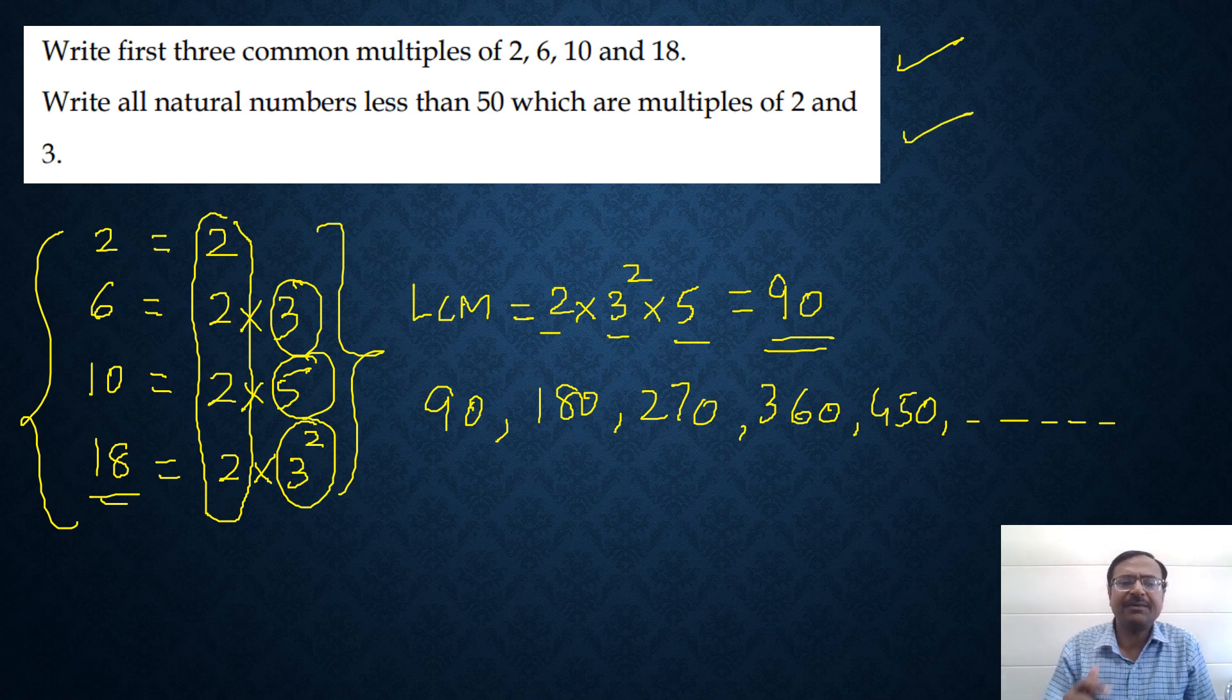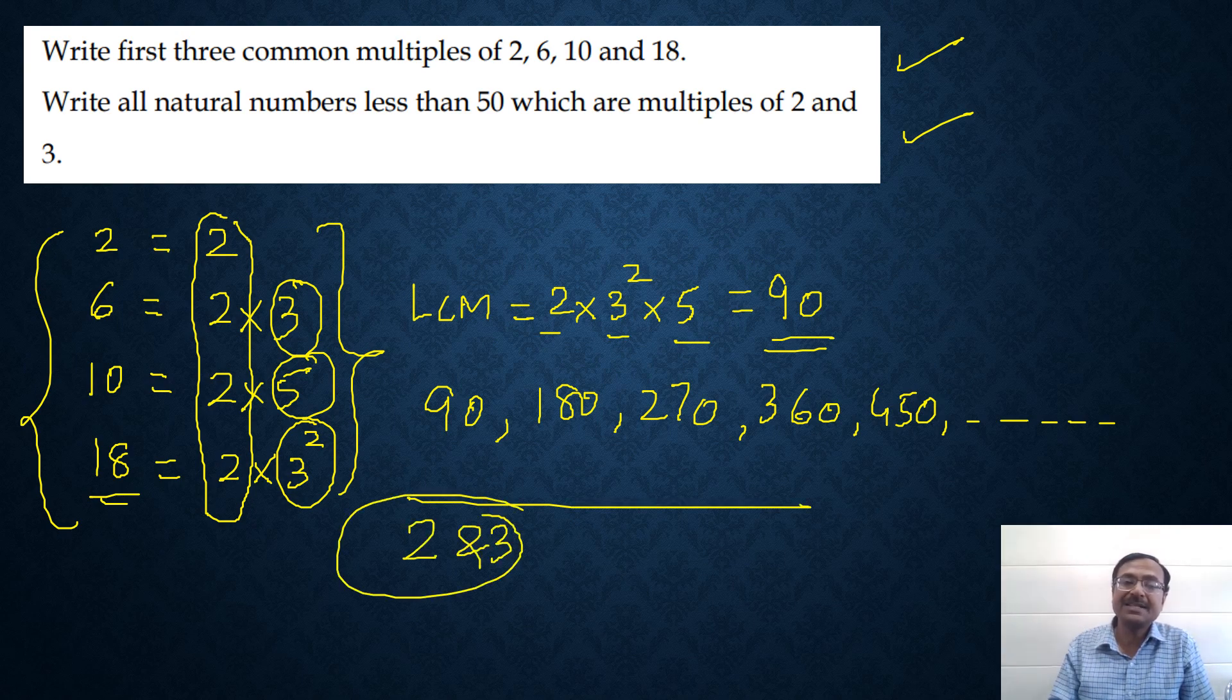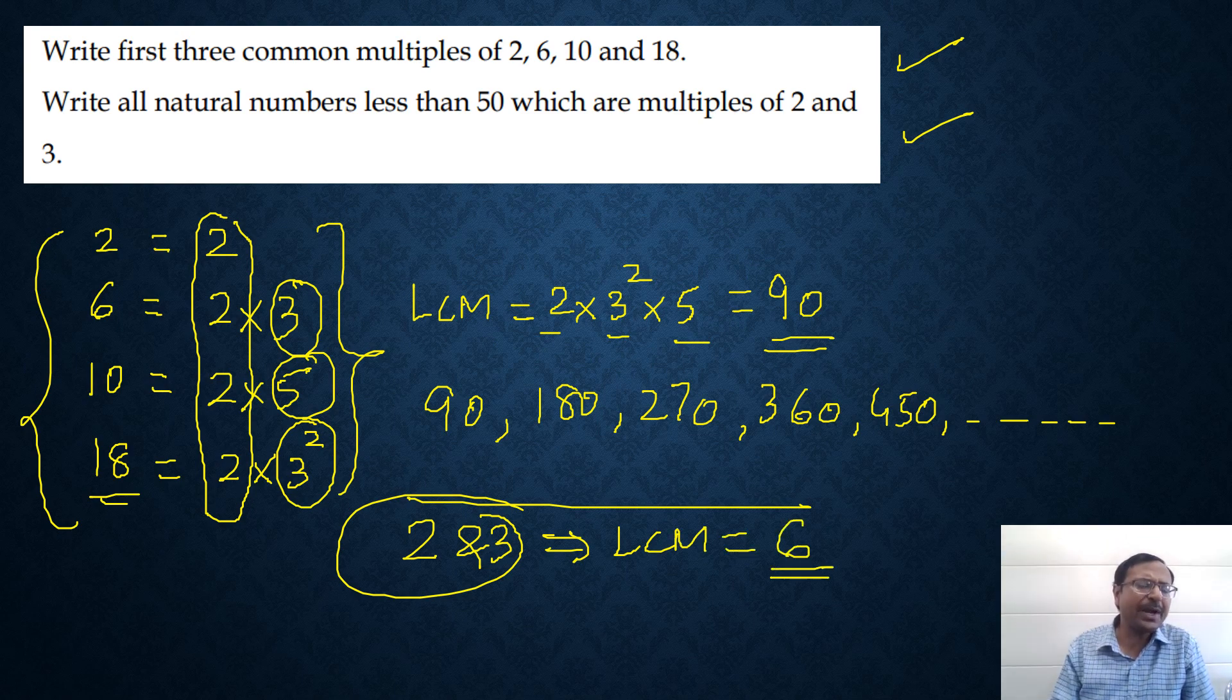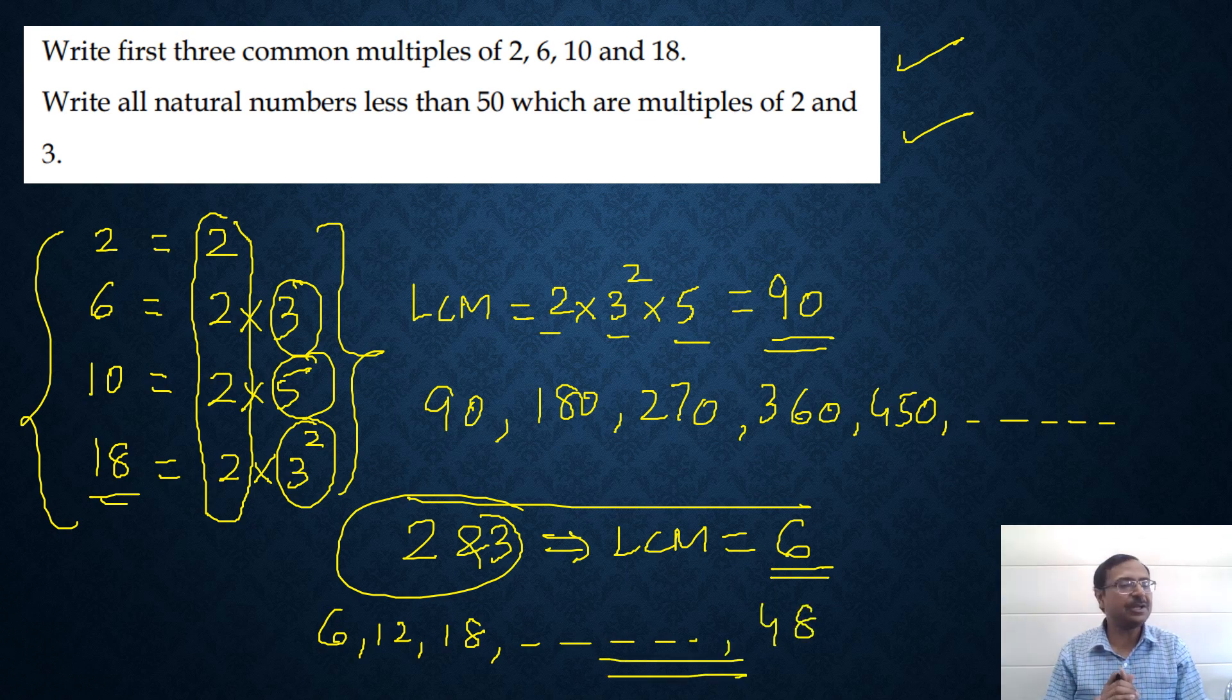Let us see the next one. Now I will leave that as a DIY for you. Write all natural numbers less than 50 which are multiples of 2 and 3. So multiples of 2 and 3. What is the LCM of 2 and 3? LCM of 2 and 3 is 6, right? So you just need to write the multiples of 6 which are less than 50. That's 6, 12, 18 so on up to 48. Let me know in the comment section how many multiples are there and you will get to the answer.